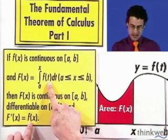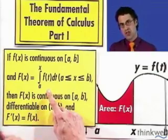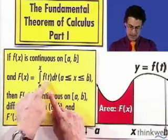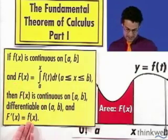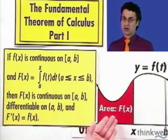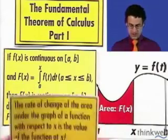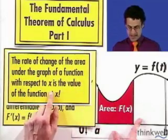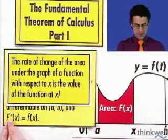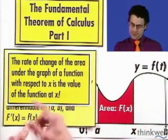What it's saying is: if you take the derivative of an integral, you get the original function. Derivative and integral undo each other — that's the philosophical bottom line. A derivative means an instantaneous rate of change, so this is saying the instantaneous rate of change of the area function equals the original function. What the fundamental theorem of calculus part one is really saying is: the rate of change of the area under the graph with respect to x is the value of the function itself. The derivative of the area equals the function itself.